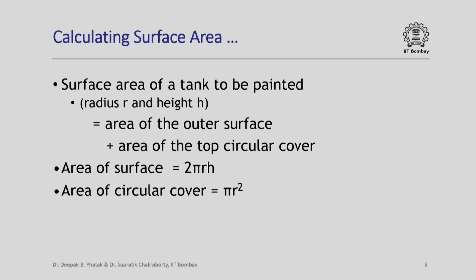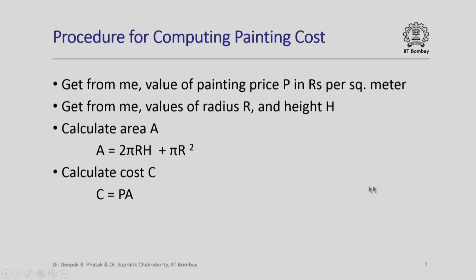Having modeled this problem using mathematical formulae, we are now ready to write down a procedure for computing the cost. The procedure is written as if it will be executed by some person. First, get from me the value of painting price p in rupees per square meter. Then get from me the values of radius r and height h. Next, calculate area a = 2πrh + πr². Finally, calculate cost c = p × a.